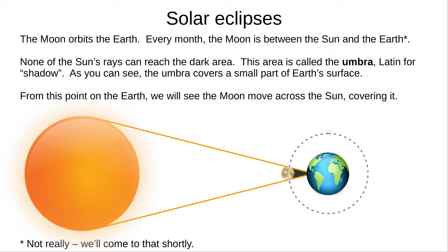This dark patch is called the umbra, Latin for shadow. Think of an umbrella, which can shade you from rain and Sun.